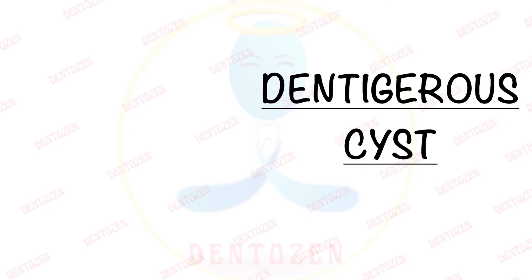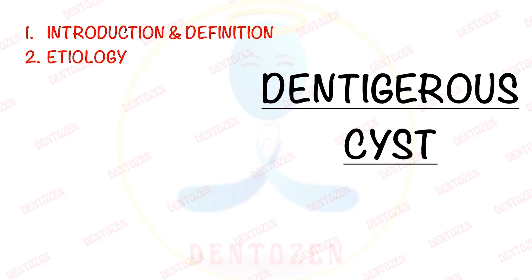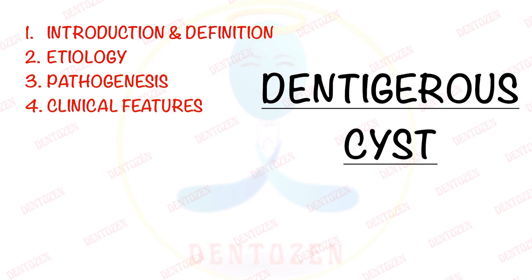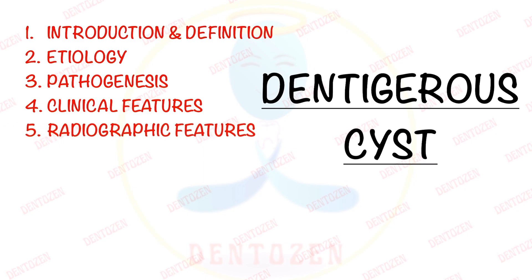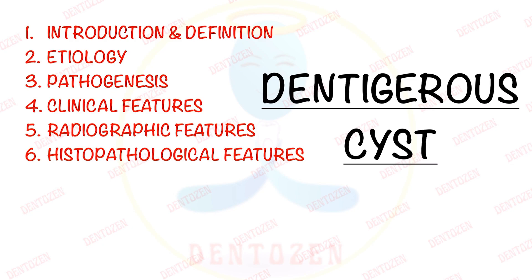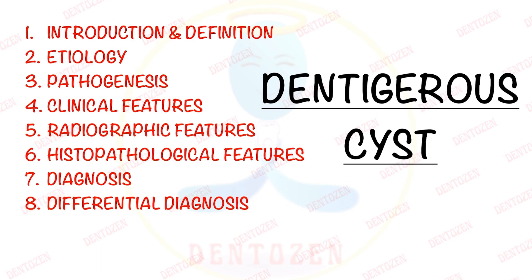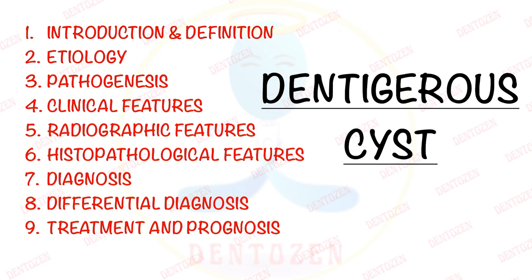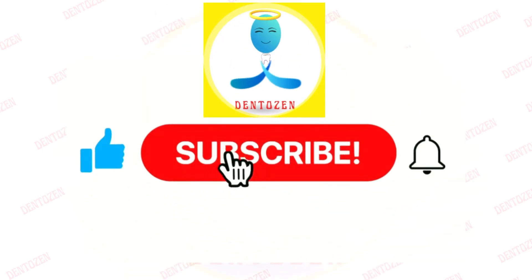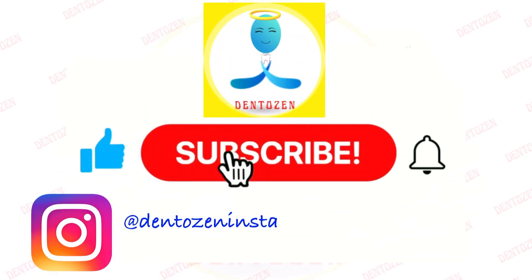In this video we are going to discuss: introduction and definition, etiology (causes), pathogenesis (how it forms), clinical features including most common age, gender, and site, signs and symptoms, radiographic features, histopathological features, diagnosis, differential diagnosis, treatment, prognosis, and complications. Before we begin, subscribe to Dentists and follow on Instagram and Facebook for more related content.